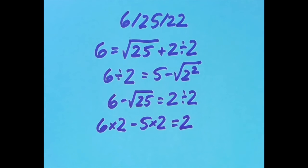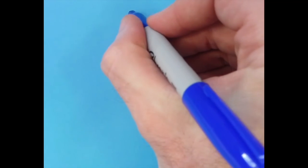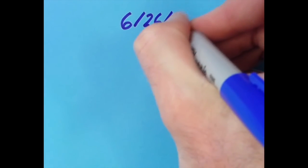Now, tomorrow is June 26th, so we can write the date as 6/26/22. We have lots of twos and sixes for tomorrow, so see if you can come up with an equation for the digits in this date.